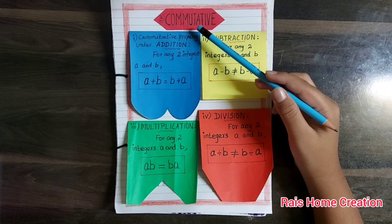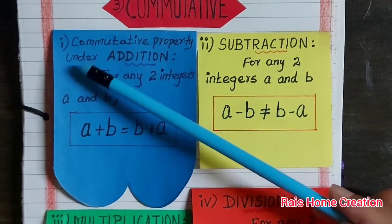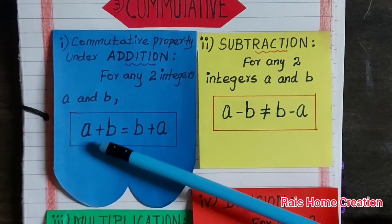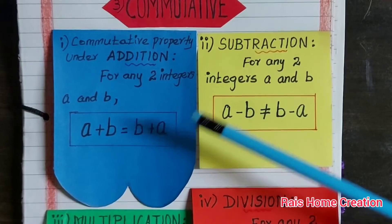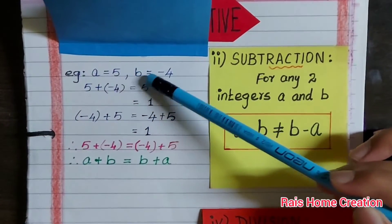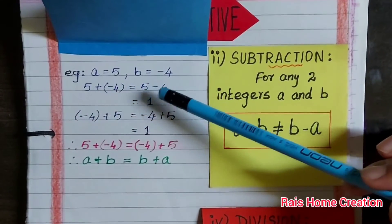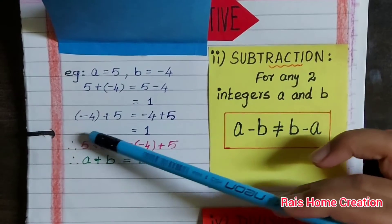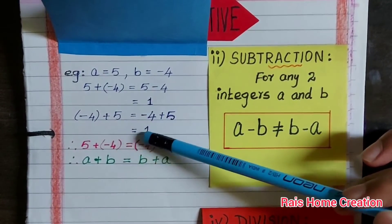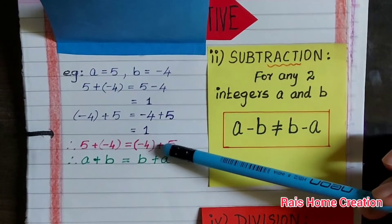Commutative property. First, commutative property under addition. For any two integers A and B, A plus B equal to B plus A. Example: A equal to 5, B equal to minus 4. 5 plus minus 4 equal to 5 minus 4 equal to 1. Minus 4 plus 5 equal to minus 4 plus 5 equal to 1. Both the answers are the same. Hence, the condition is equal.